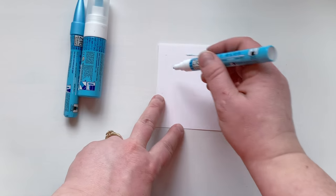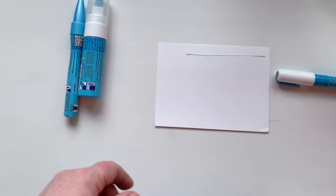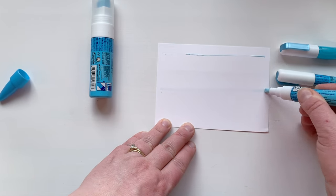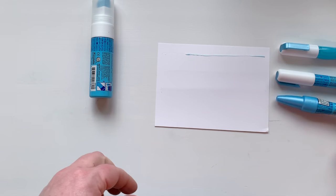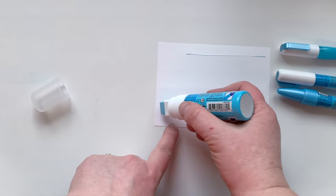Next up we have the fine tip which is more like a bullet marker tip. Then we have the chisel tip which can be turned to get a couple different application sizes. And last up we have the jumbo tip for the largest of applications.